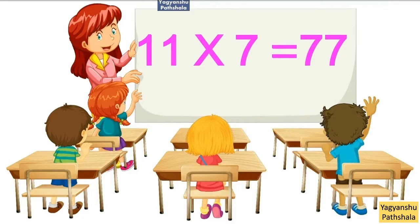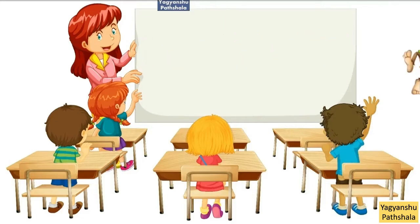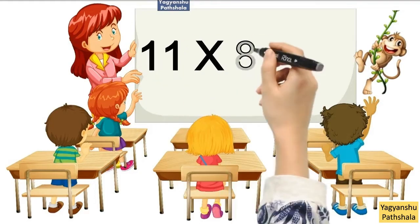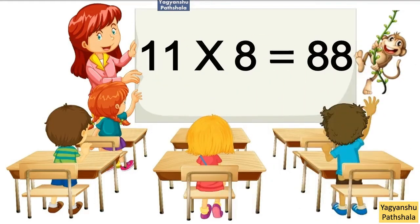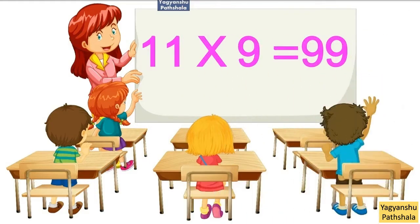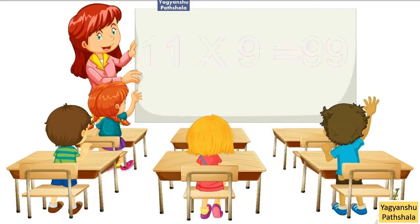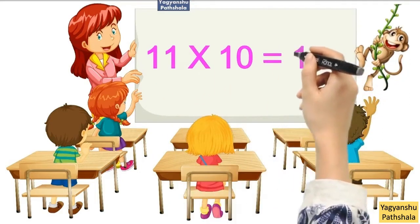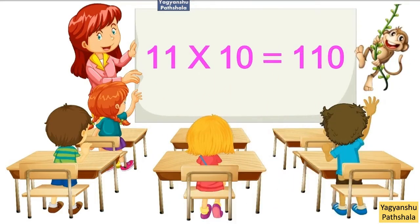11 times 7 equals 77. 11 times 8 equals 88. 11 times 9 equals 99. 11 times 10 equals 110.